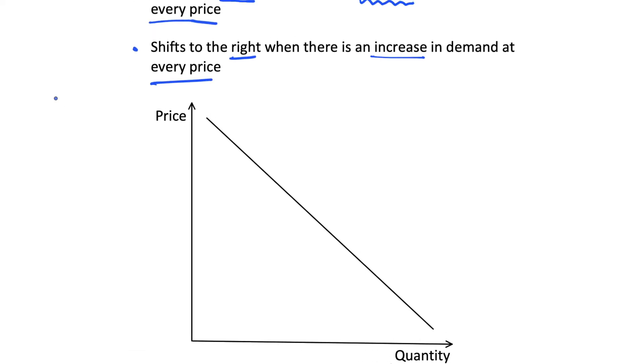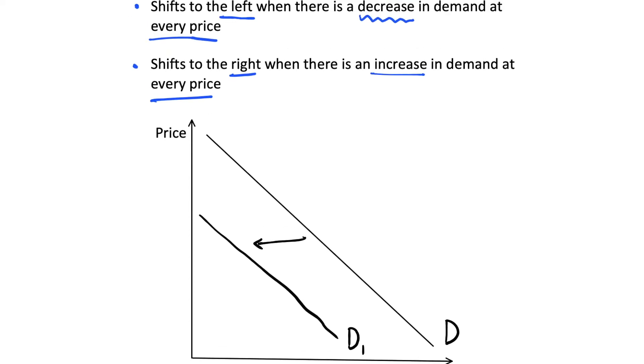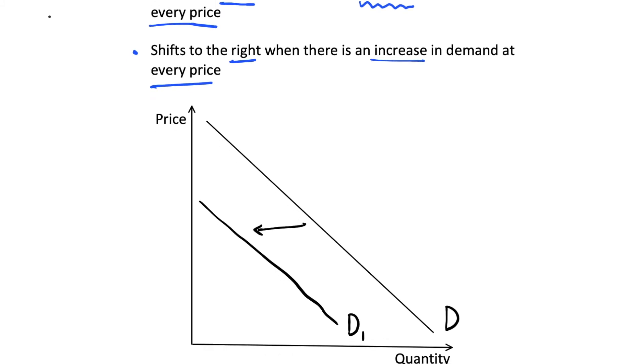So if we just illustrate this on our diagram here, so we have a downward sloping demand curve which we'll call D. Let's first consider a shift to the left, so we're going to shift our demand curve to the left and this will become demand curve D1. And this is when there is a decrease in demand at every price as I've written there. Sorry that this all doesn't quite fit on the screen at the same time.